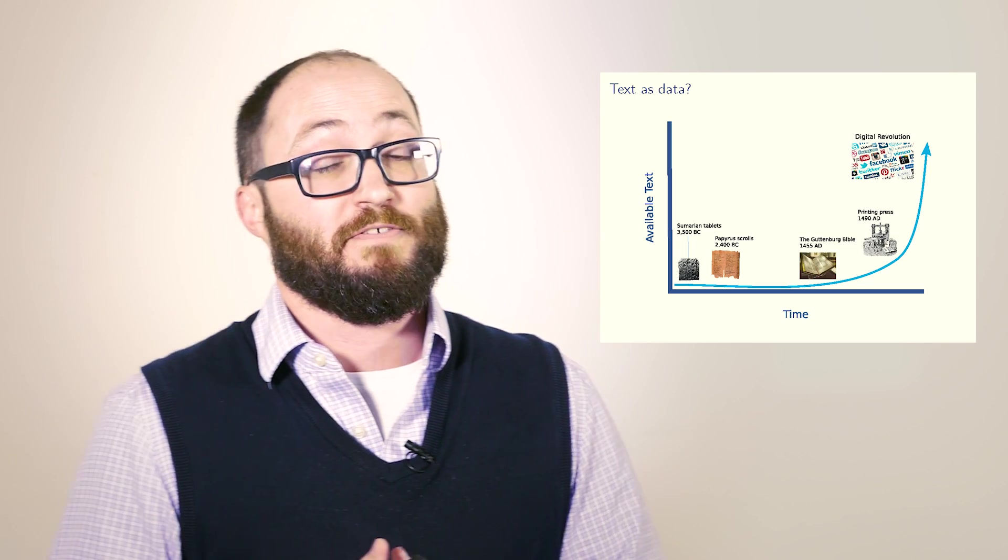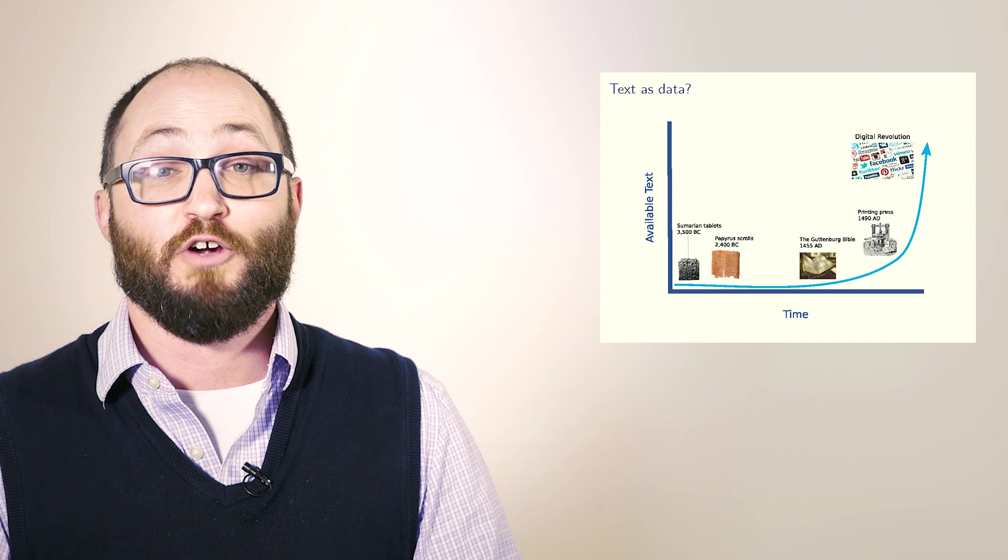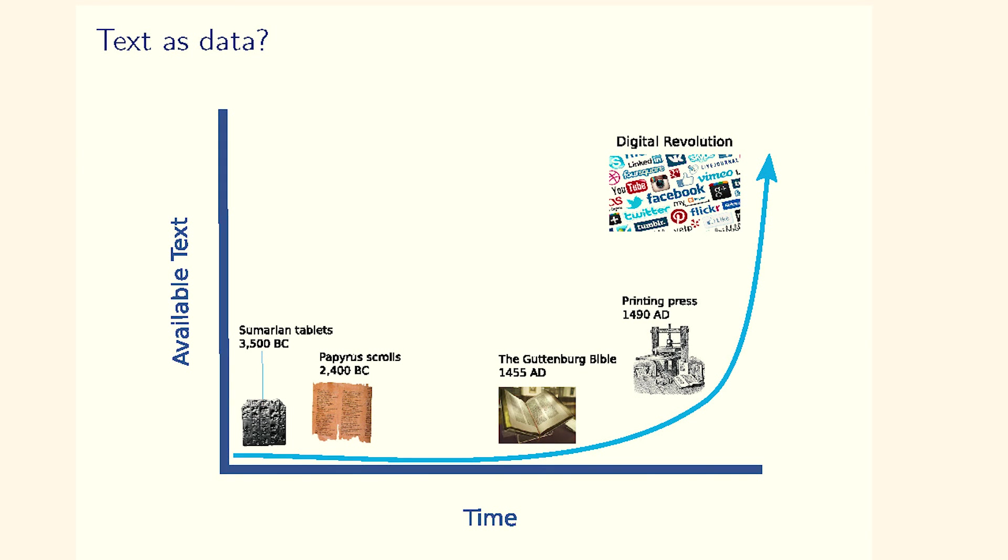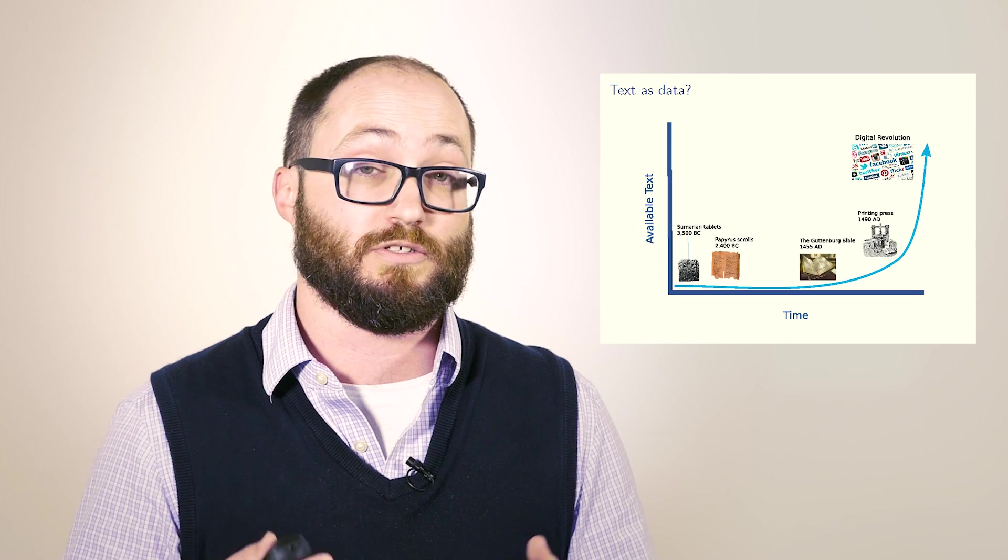And so we've obviously been, as humankind, been producing text for quite a long time now. So here we have the Sumerian tablets in 3500 BC, all the way up to the Gutenberg Bible, the printing press. And now what do we have? We have really what's called the digital revolution.